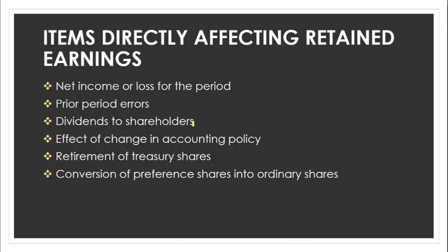Dividends declared or paid during the year shall be a deduction to retained earnings. Another item affecting retained earnings is the effect of a change in accounting policy — it is shown as an adjustment at the beginning balance of retained earnings, just like prior period errors. If net income of the prior period is understated due to the accounting policy change, the effect is added; if overstated, it is deducted.